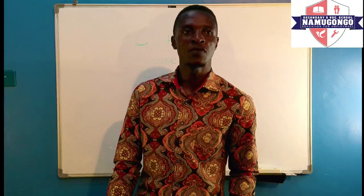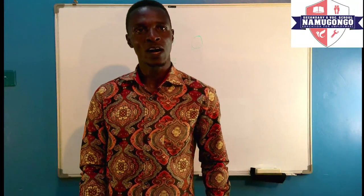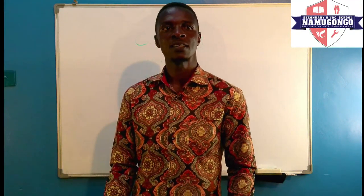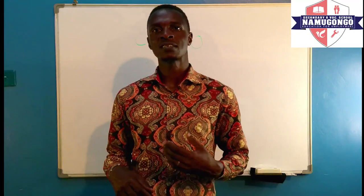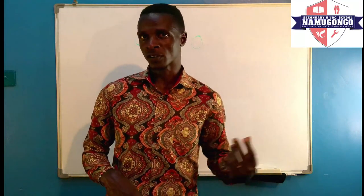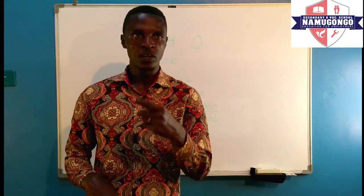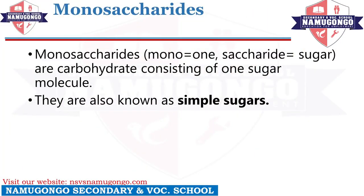The first type of carbohydrate we are going to look at is the monosaccharides. Just like the name suggests, the word 'mono' means one. The new word here is 'saccharides', which just means sugars. So if someone says monosaccharide, it means one sugar molecule. Monosaccharides are basically those carbohydrates that consist of only one sugar molecule.